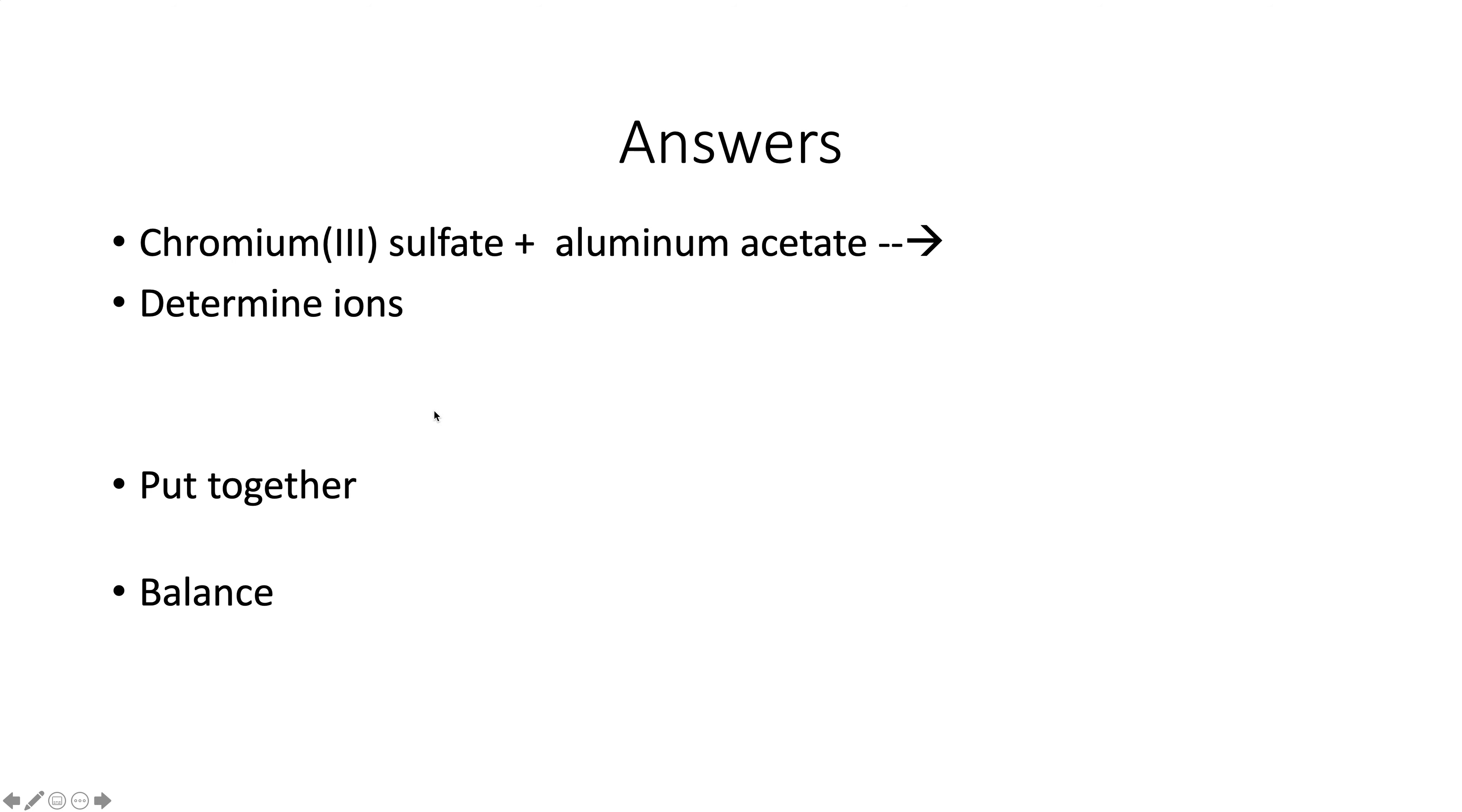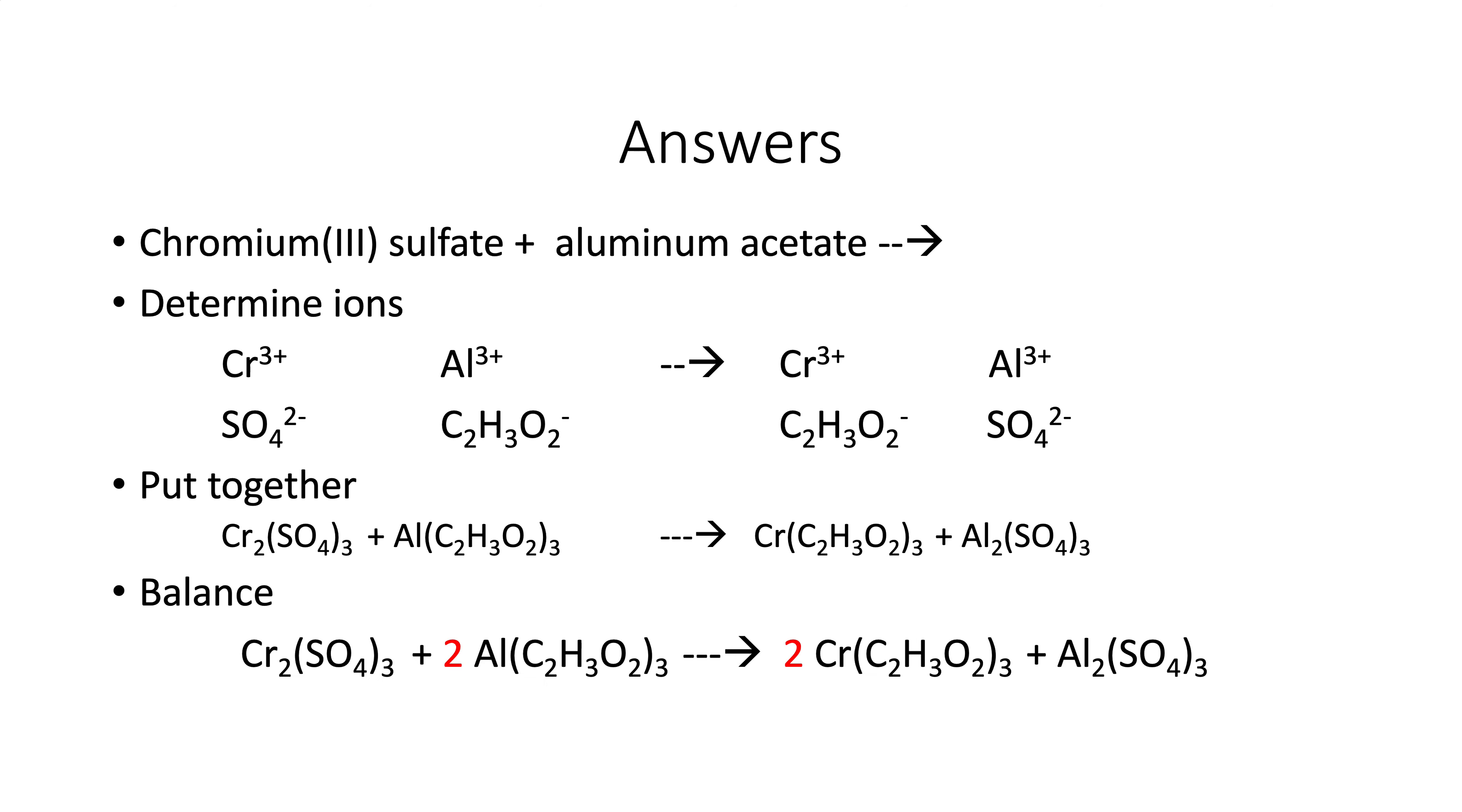I believe there's one more. Try this on your own. Get the ions. Chromium three, that means the charge is plus three. Sulfate is a polyatomic ion. Now we'll put the ions together. And now we'll balance it. That should do it. This is practice, practice, practice.